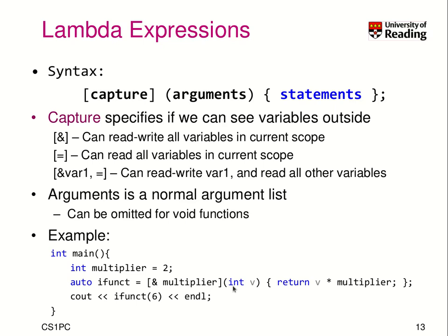Then we set this function. It takes an argument which is a 'v' of type integer, and it shall return v times the multiplier. Remember, multiplier is 2 — it's this variable. So now when I call ifunct with 6, I will get 6 as the actual argument. And 6 times multiplier, which is 2 at the moment, will return 12. So this is really a powerful concept to get access to local variables.